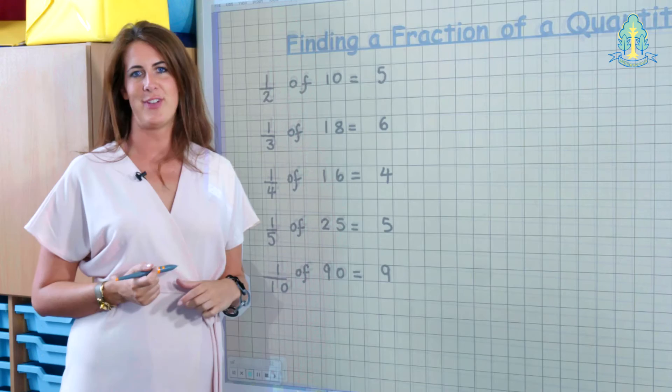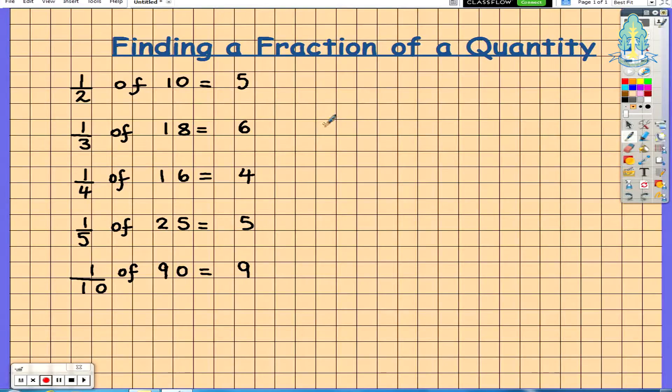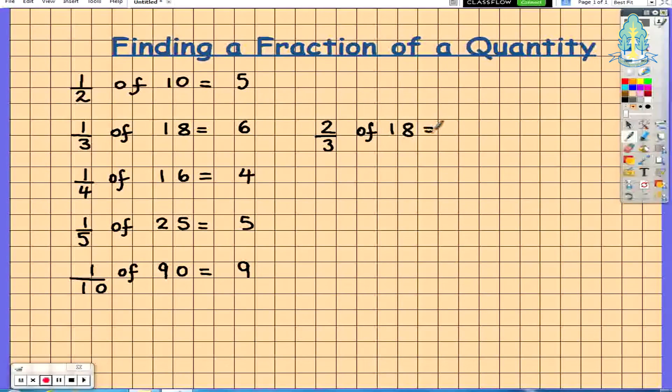The next step would be to find a fraction of a quantity when the numerator is greater than 1. So this example: 2 thirds of 18. We would do the same, and I'll show with the red pen. We will take 18 and we will divide by 3. So 18 divided by 3 gives you 6.